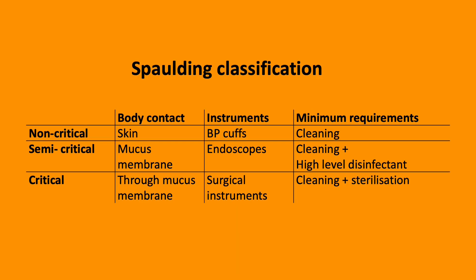The Spaulding classification is a worldwide strategy for sterilisation and disinfection of objects and surfaces, based on the degree of risk to the patient. There are three different groups. Non-critical items come into contact with the skin — for example, a blood pressure cuff — and require cleaning.